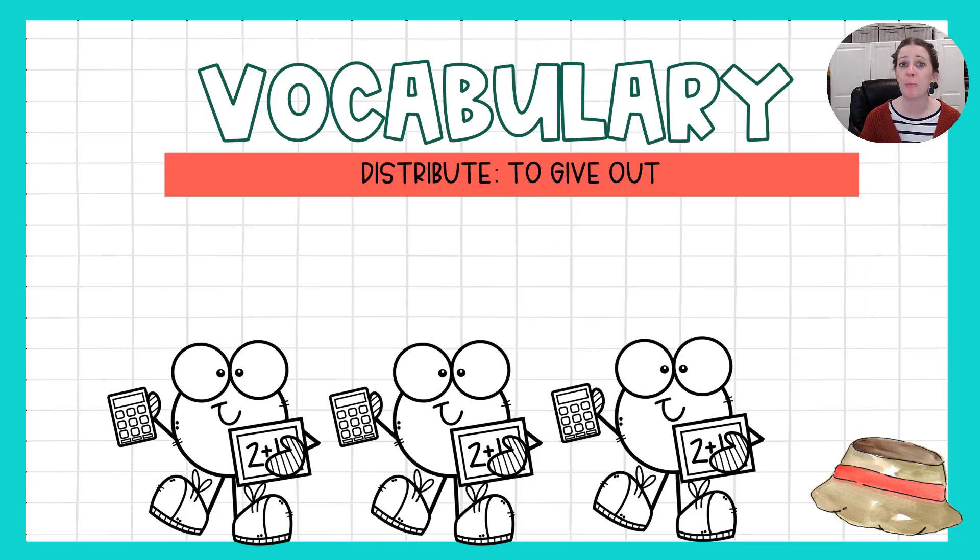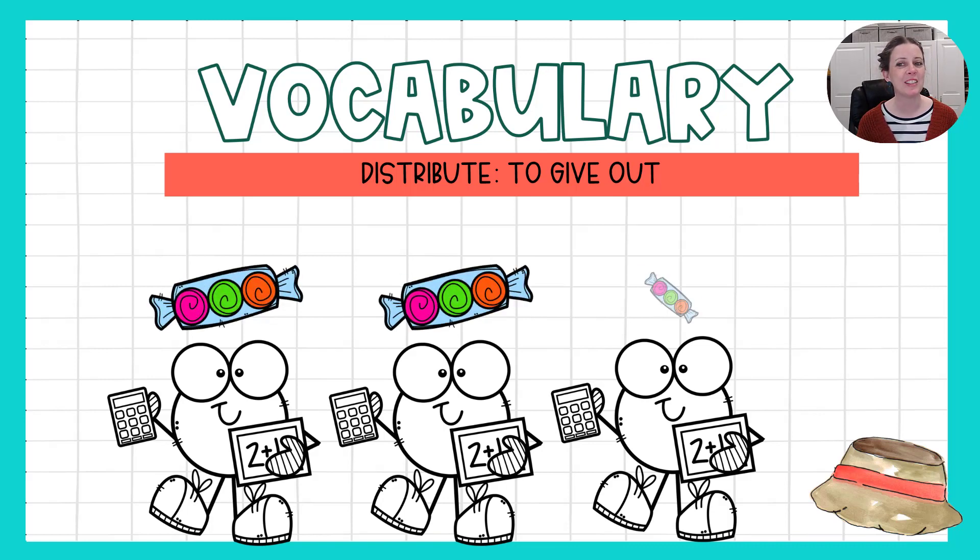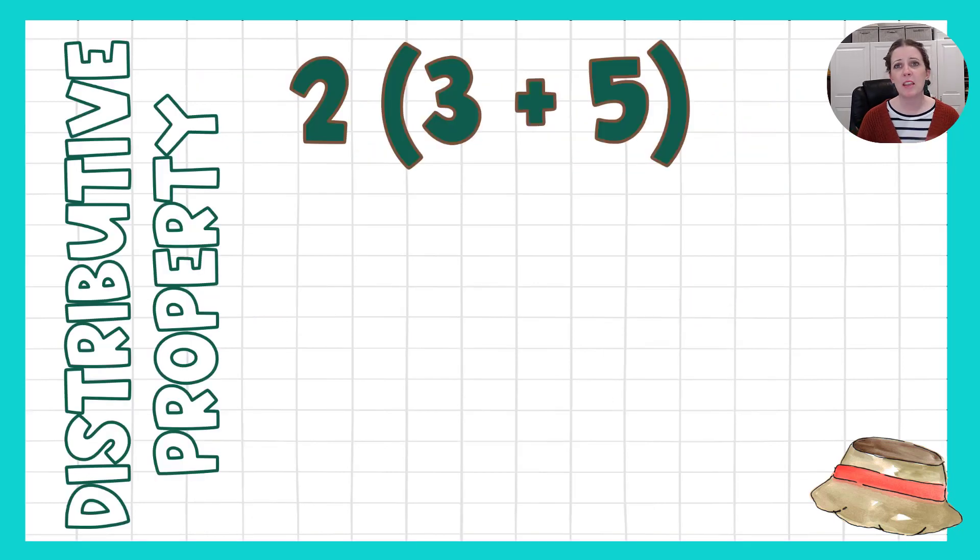Let's just go ahead and jump in and figure out what distributive property is. Well, hopefully you've heard the word distribute, or to give out. I can distribute supplies to you, I can distribute markers to you, I can distribute pencils to you, or on a really good day, maybe I distribute some candy to you. So distribute, the distributive property is to give out.